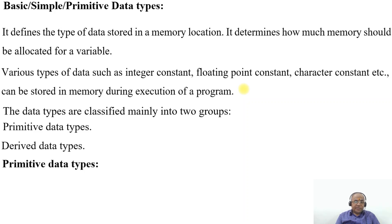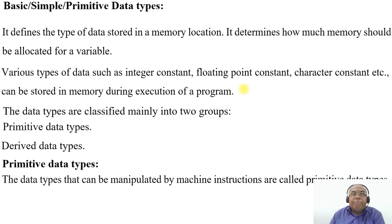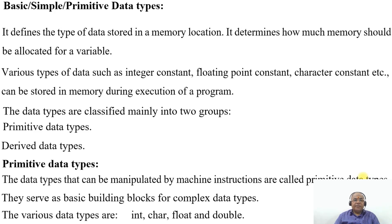What is primitive data types? The data types that can be manipulated by machine instructions are called primitive data types. They serve as basic building blocks for complex data types. The various types of data types are int, char, float, and double.